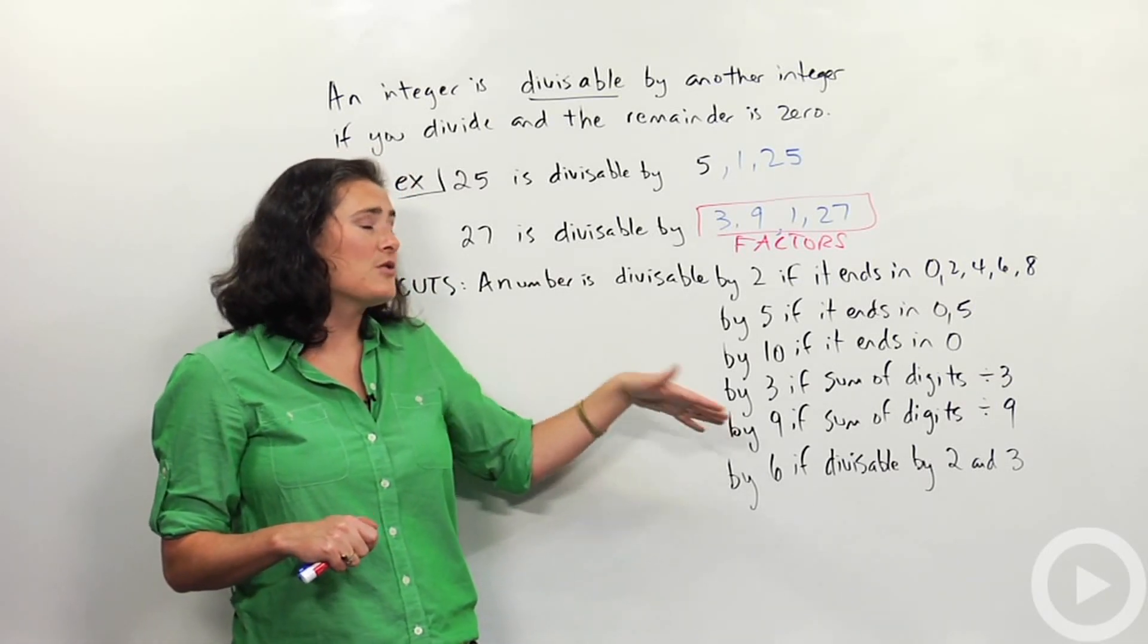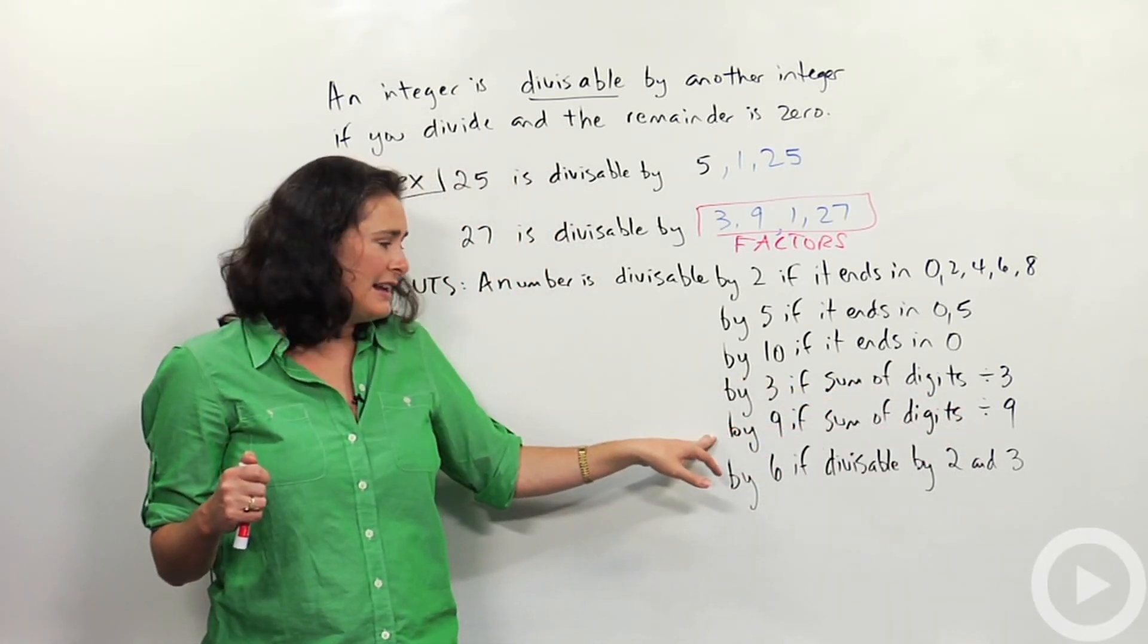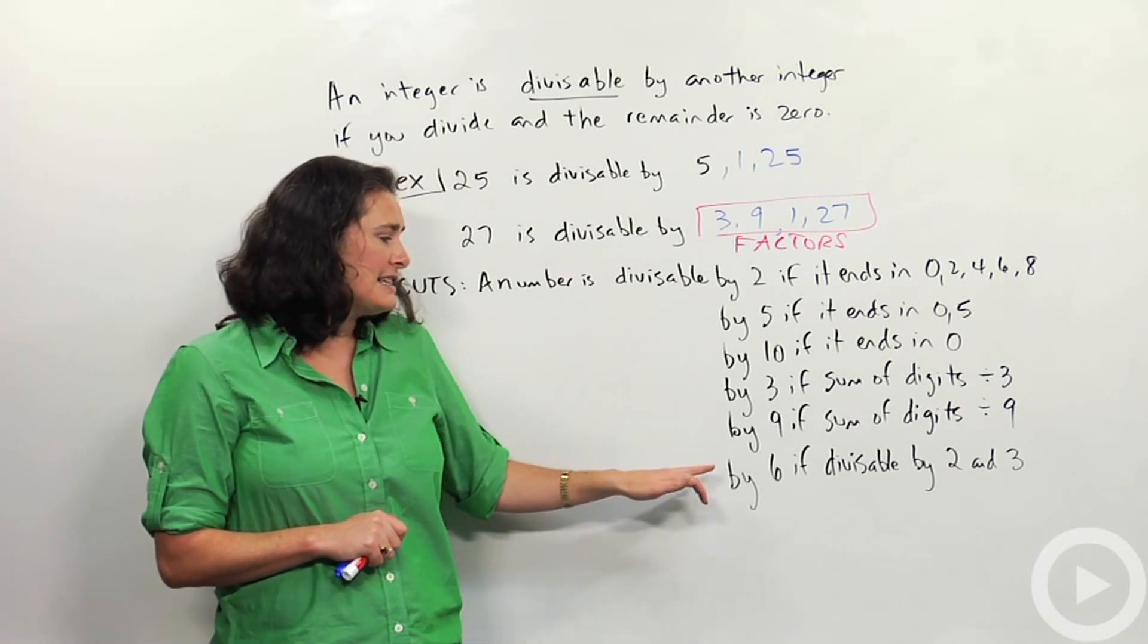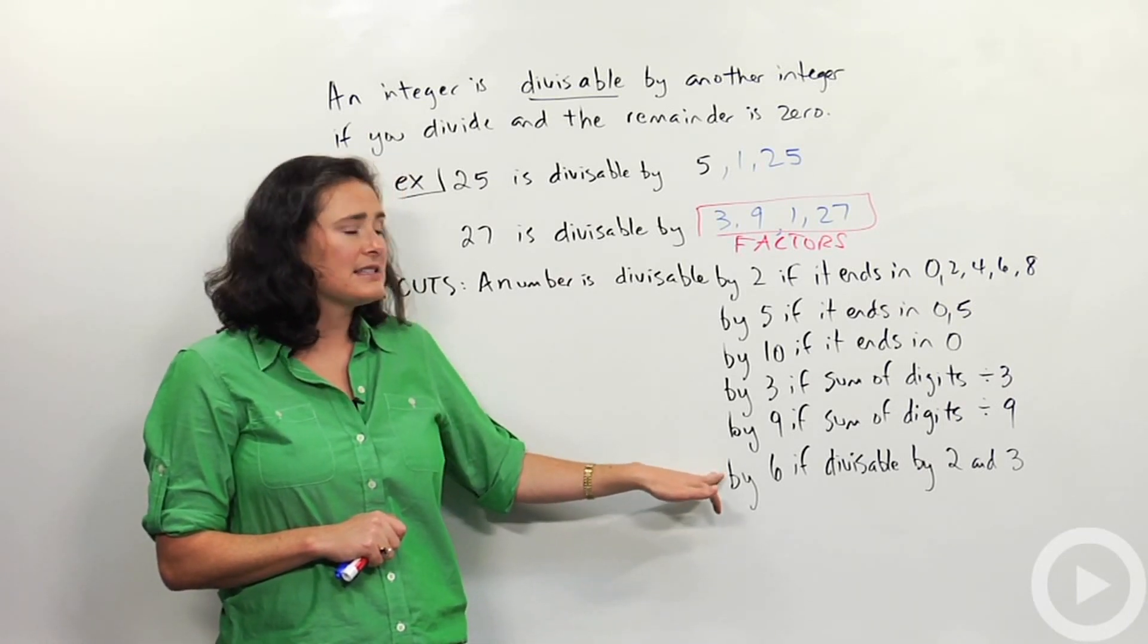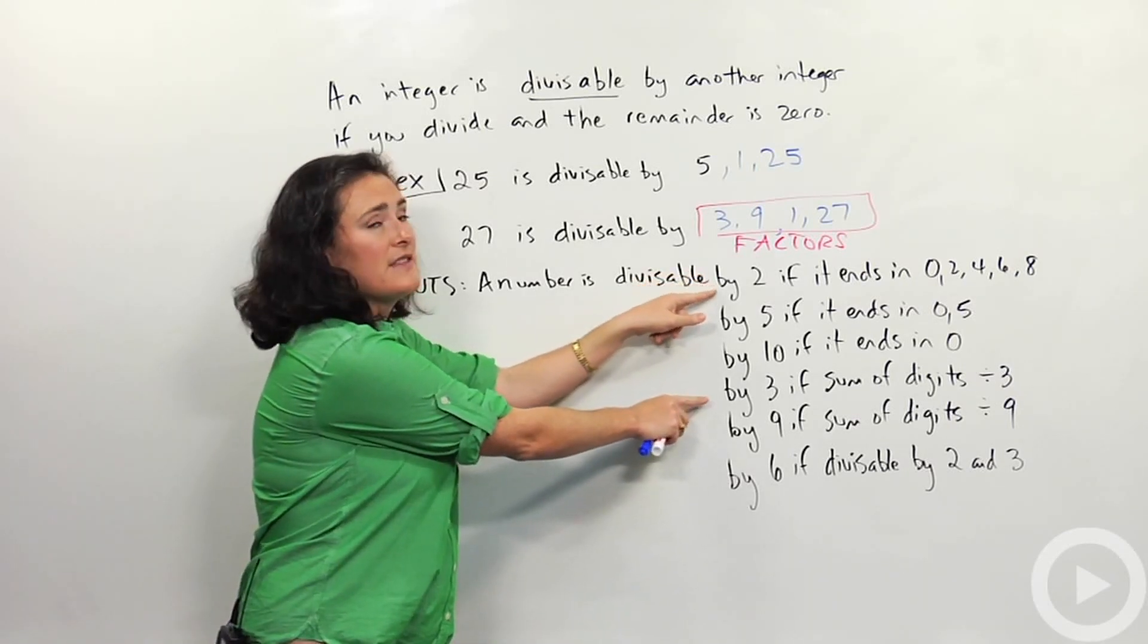Or by 9 - if you add up all the digits and your answer is divisible by 9, then the original number was divisible by 9. And then lastly, a number is divisible by 6 if it's divisible by both 2 and 3, if both of these rules hold.